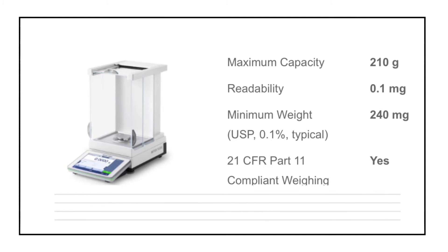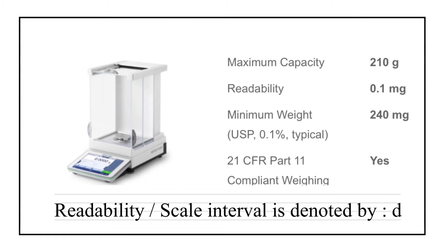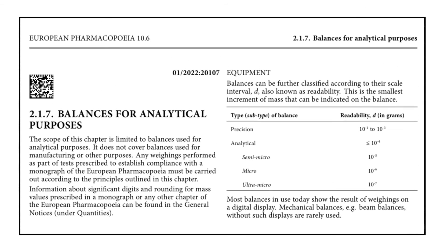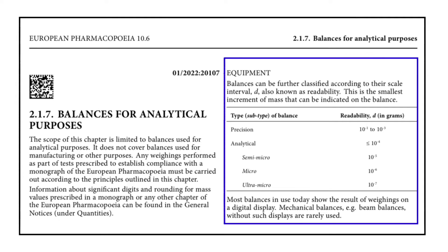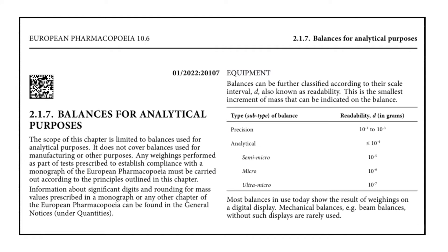One important point to note is that scale interval or readability is denoted by the small letter 'd'. Now, as per European Pharmacopoeia chapter 2.1.7, balances are classified into two major types: precision balance and analytical balance. Analytical balances are further classified into three main types: semi-micro balance, micro balance, and ultra-micro balance. This classification is based on balance readability.